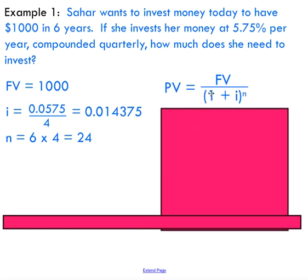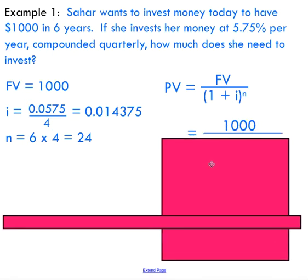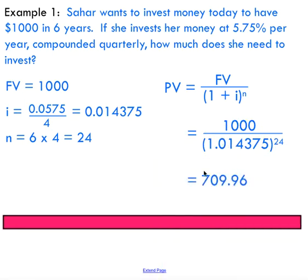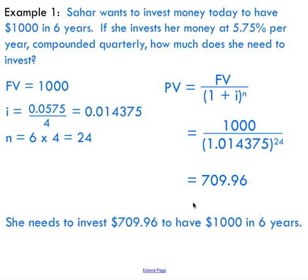Substituting those values in, this is really just a matter of dividing two numbers to get your present value. This tells you that you need to invest $709.96 to have $1,000 in six years in this particular account.